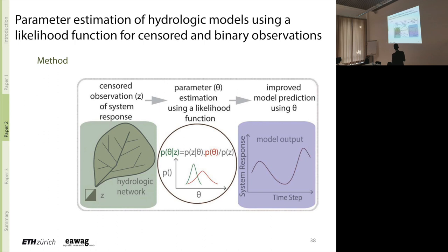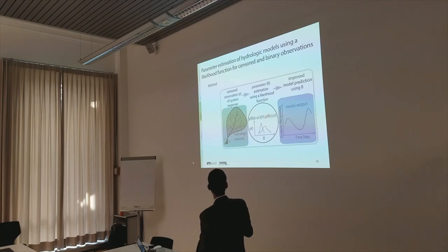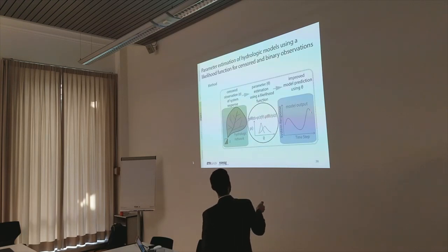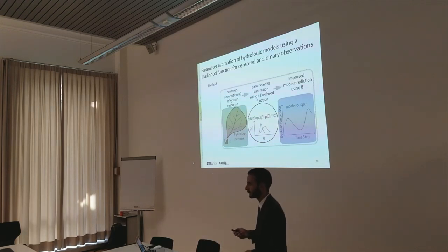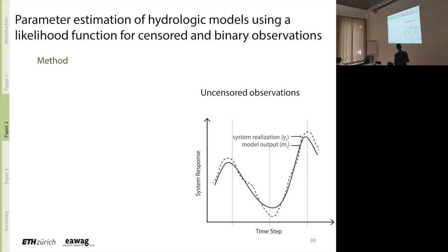This would be the flow chart where essentially you have a hydrologic catchment. This is the top view and then you will have the system response measured here. We assume the system response is censored. There is some kind of limited information in these observations. Then we use Bayesian updating to update our belief about the model parameters given these observations. And given those updated parameter values, we expect that the model would perform better and the uncertainties would have reduced the parametric uncertainties at least.